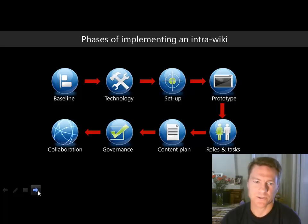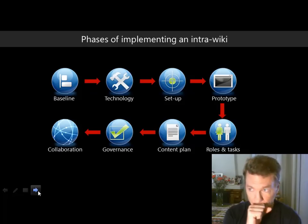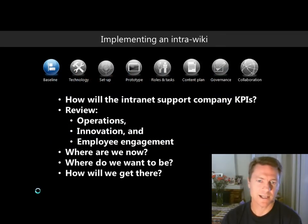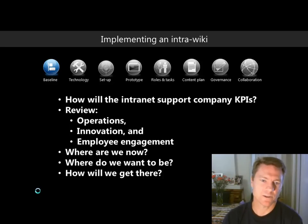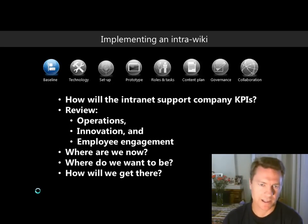After explaining the phases I'll show a SharePoint 2013 example. The first phase is to baseline — to find out where you are now: how SharePoint is supporting the company's key performance indicators, how it supports operations, innovation, and employee engagement. We need to understand where we are, where we want to go, and how we're going to get there.